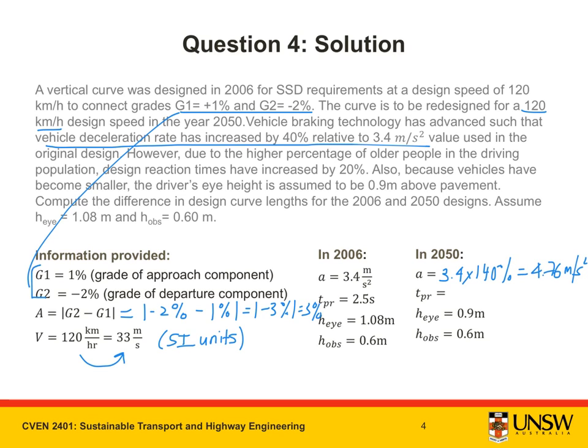Now let's move on to t_PR. We have been told due to the higher percentage of older people in the driving population, design reaction times have increased by 20%. Now in 2006, we take the design reaction time to be 2.5 seconds, which is the standard perception reaction time. And in 2050, it has increased by 20%. So calculating an increase of 20%, we say t_PR is equal to 2.5 times 120%. Putting this into my calculator, I get 3 seconds.